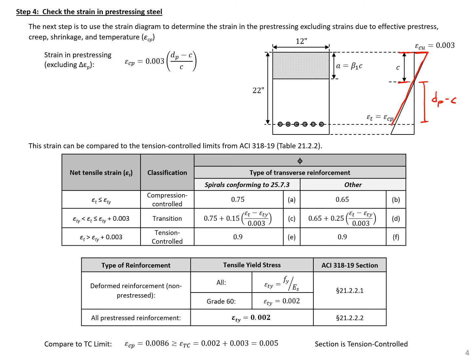Using similar triangles, we solve for the strain at the center of our prestressing: 0.003 times (22 inches minus 5.7 inches) divided by 5.7, giving us a strain of 0.0086.